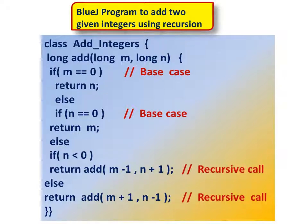BlueJay program to add two given integers using recursion. Class AddIntegers. long add(long m, long n): if m is equal to 0, return n. Else if n is equal to 0, return m. Else if n less than 0, return add(m - 1, n + 1). Else return add(m + 1, n - 1).